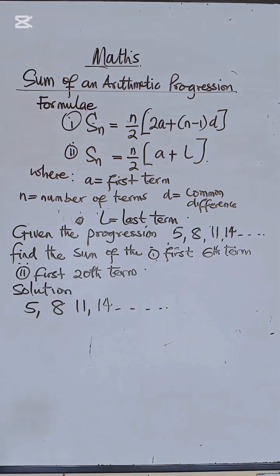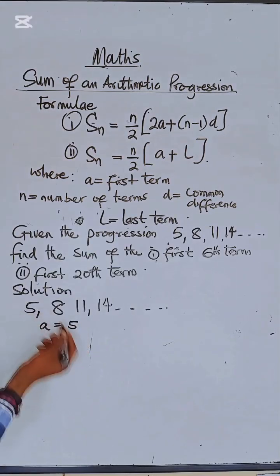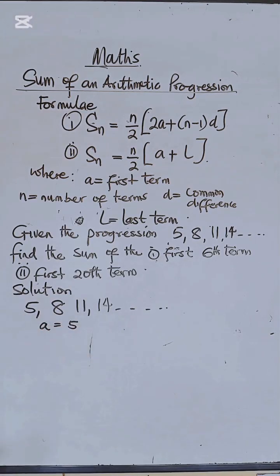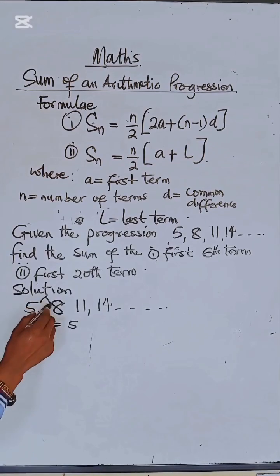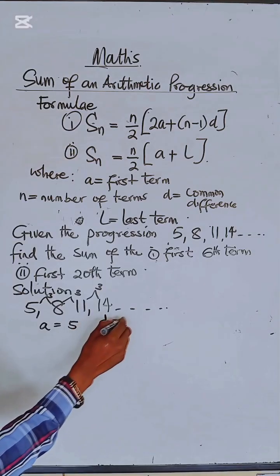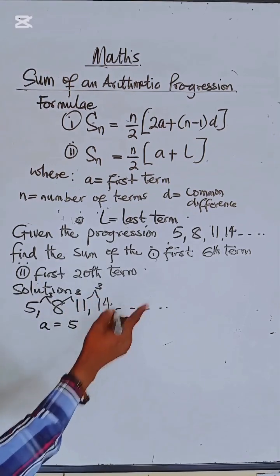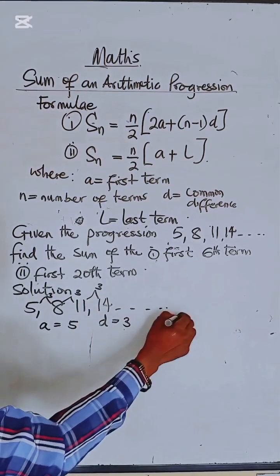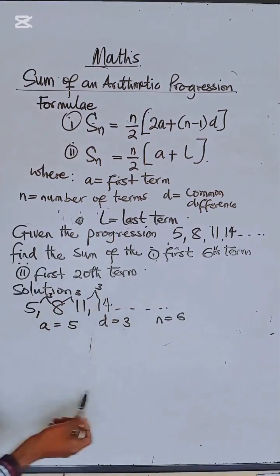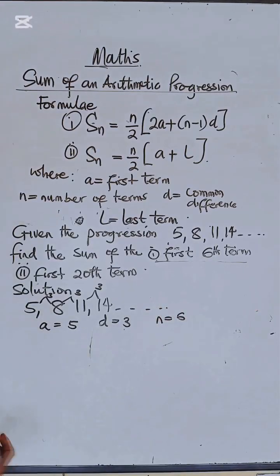Let us identify the first term — the first number is 5. The common difference between the numbers, if we are observant, is 3. So the common difference D is 3. For the number of terms: to find the sum of the first 6 terms, N equals 6. If we had to find the first 20 terms, N would equal 20. But let's find the first 6 terms first.